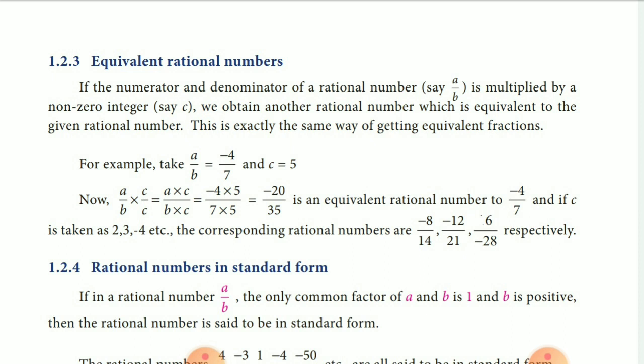Minus 4 by 7 is multiplied by 5 by 5. We got minus 4 into 5, minus 20, and 7 into 5, 35. This is an equivalent form of minus 4 by 7.